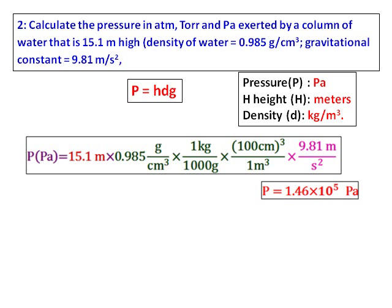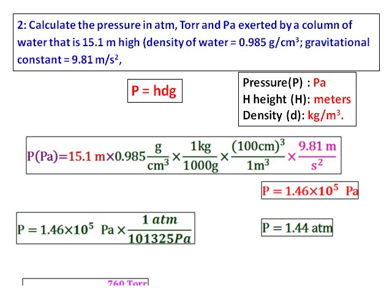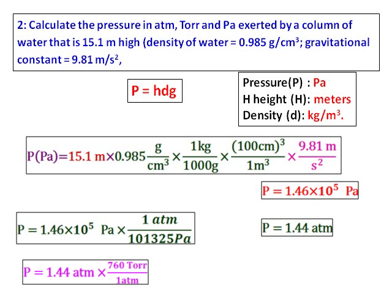Substituting the values: H is given in meters, the density is converted from grams per centimeter cubed to kilograms per meter cubed, and the gravitational value is used as given. This gives the pressure in Pascal, which is then converted into atmosphere and into Torr.